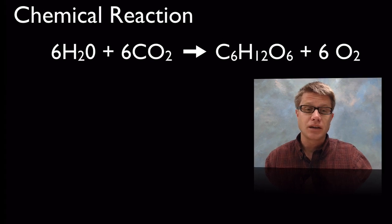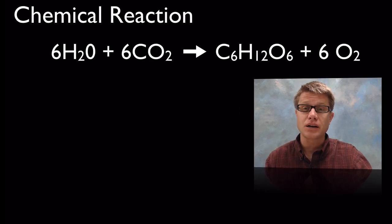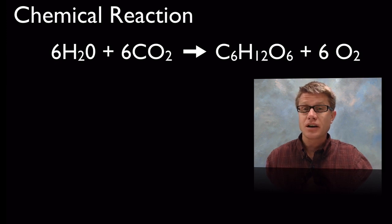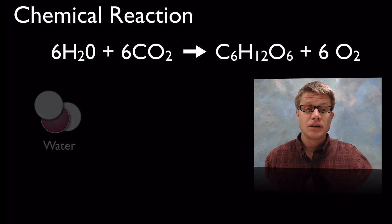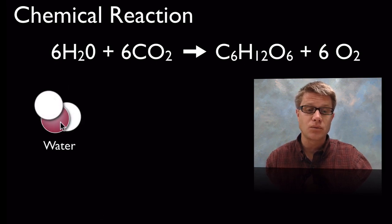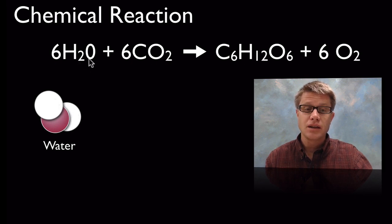In a chemical reaction like this — which is a pretty important one — this is the overall chemical reaction for photosynthesis. What we're doing is combining water and carbon dioxide and making glucose and oxygen. If we look at that graphically, water has two hydrogen atoms and one oxygen atom. The little 2 here stands for the 2 hydrogen, and the oxygen, since there's only one, we don't write a subscript underneath it.